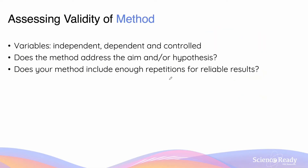Now that we've discussed what validity of the method or experiment refers to, let's discuss the subcategories of validity. When assessing validity, this can refer to the validity of the method or experimental procedure. The validity of the method mainly depends on the variables — independent, dependent, and control — which help answer: does the method address the aim and hypothesis? You should also ask: does the method include enough repetitions for reliable results?